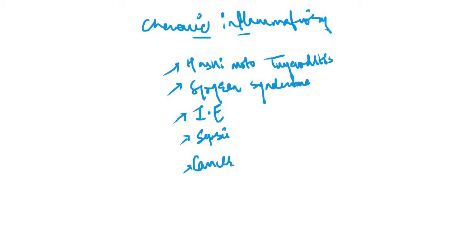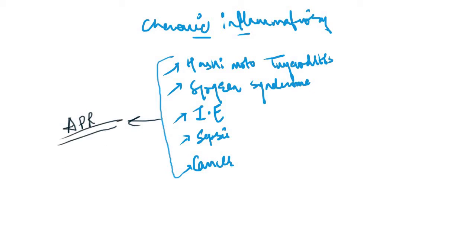In all these conditions, there is a production of some acute phase reactants — molecules which are associated with inflammatory states. One of the most important acute phase reactants is hepcidin, and there is production of hepcidin along with other acute phase reactants.